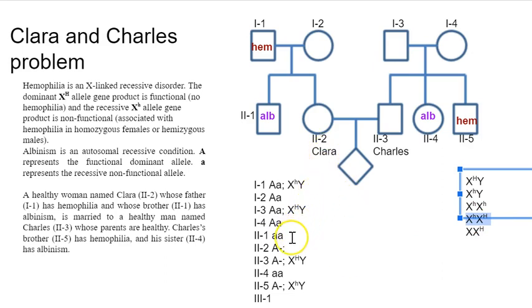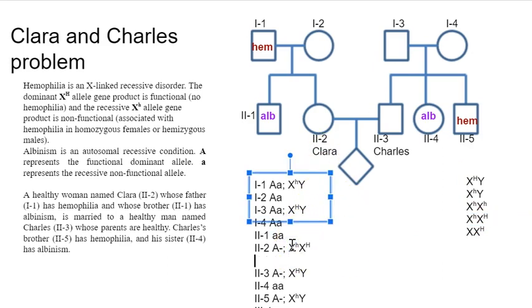So Clara's 2-2. She's an X-X, right? And she's got one dominant allele for sure. And then for now, I'm just going to put a dash here because I don't know what the other allele is.